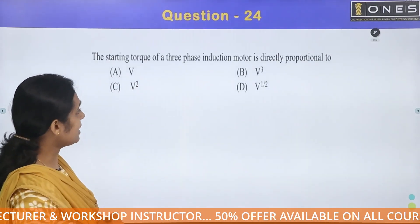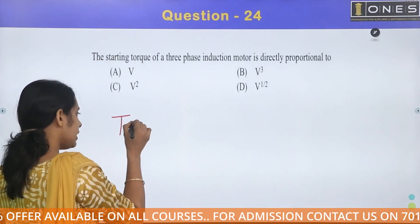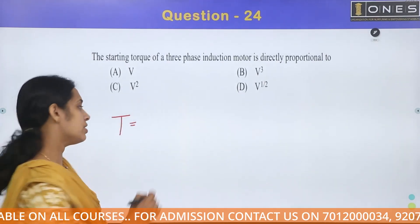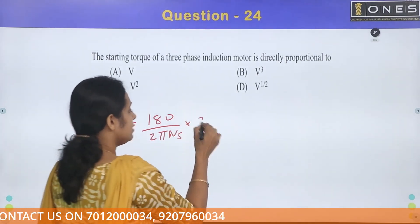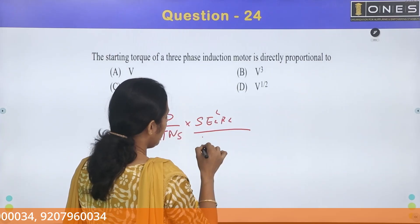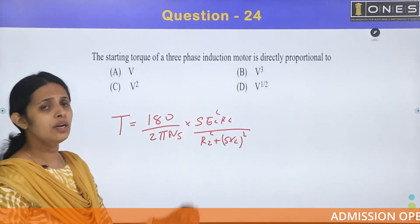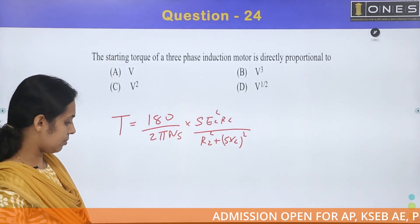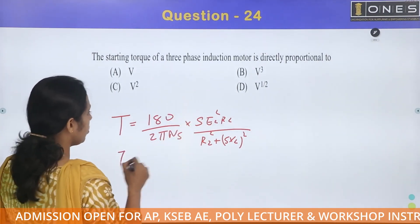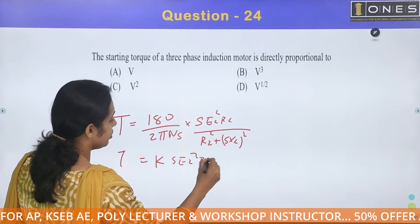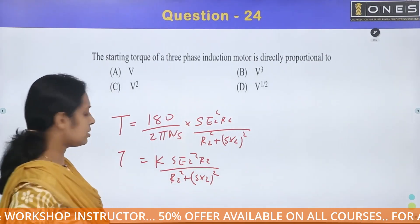Next: the starting torque of a three-phase induction motor is directly proportional to what? Generally, the induction motor torque equation is T = (180 / 2π·Ns) × (s·E2²·R2) / (R2² + (s·X2)²). Simplified, torque equals k × s·E2²·R2 / (R2² + (s·X2)²). This is the general torque equation.